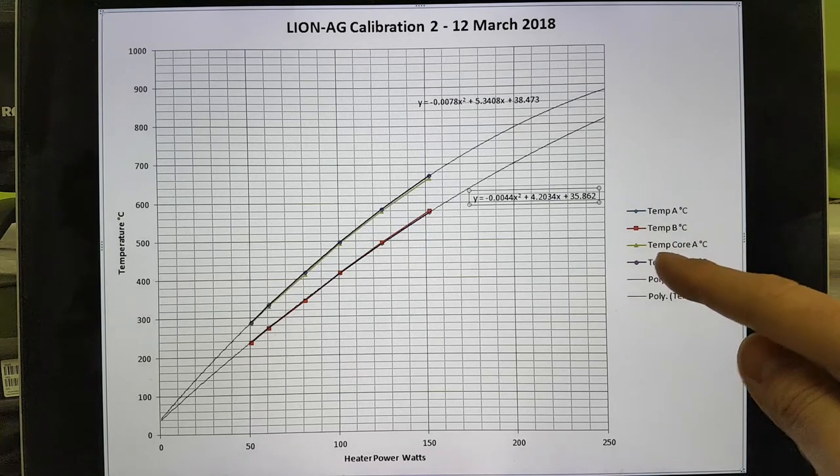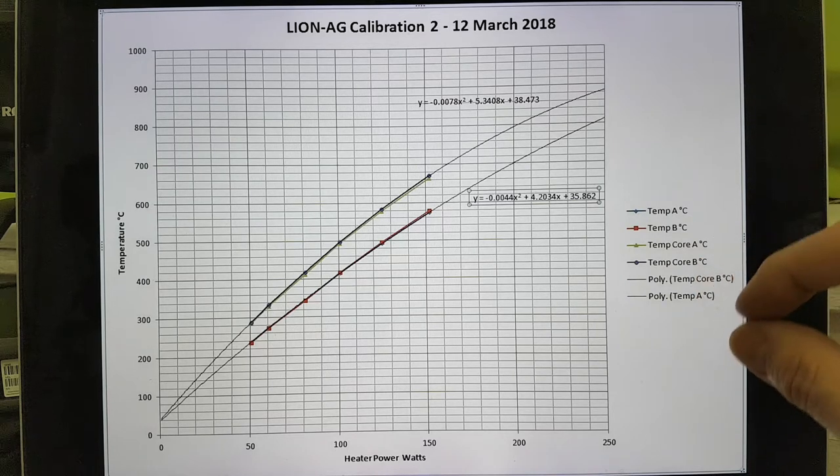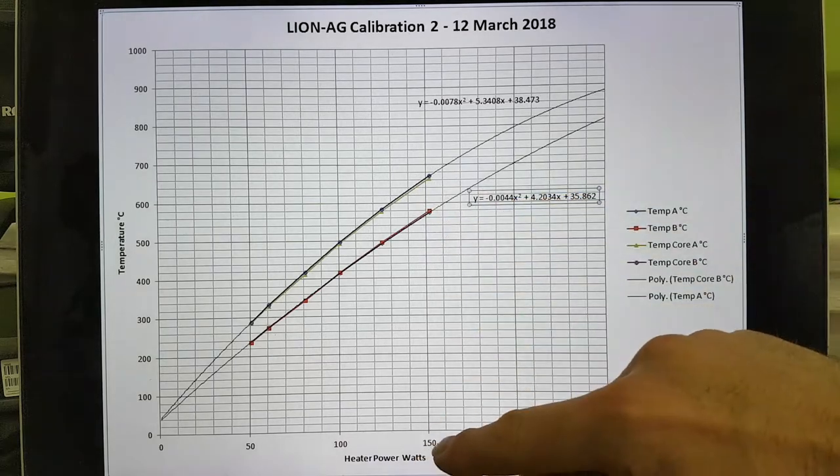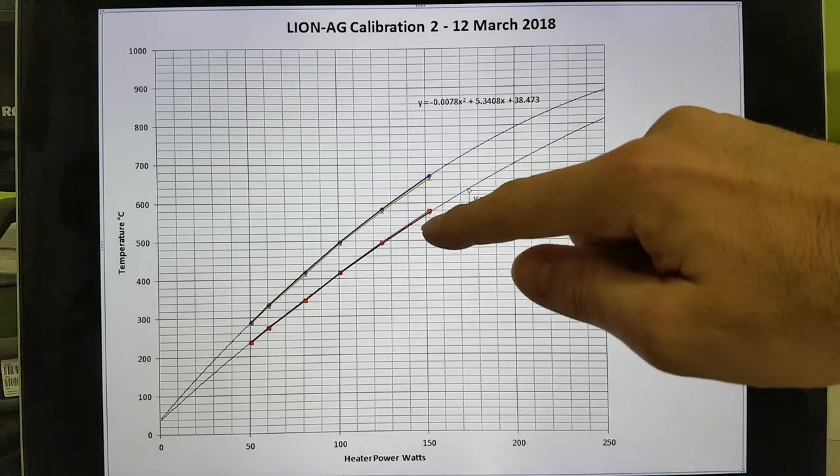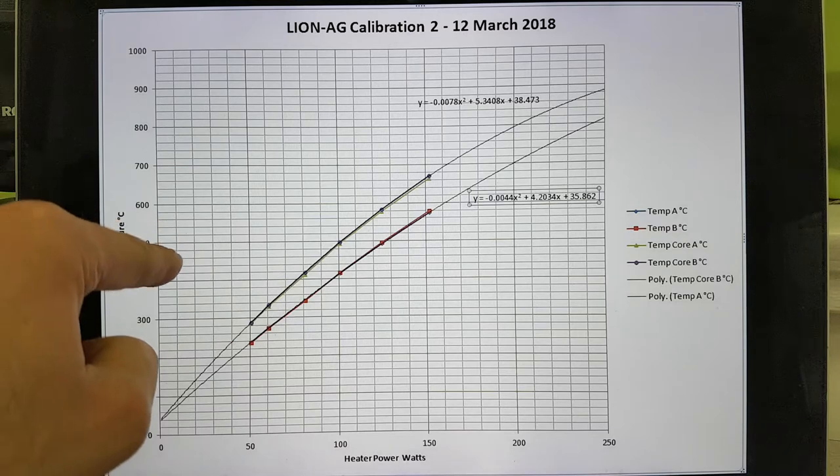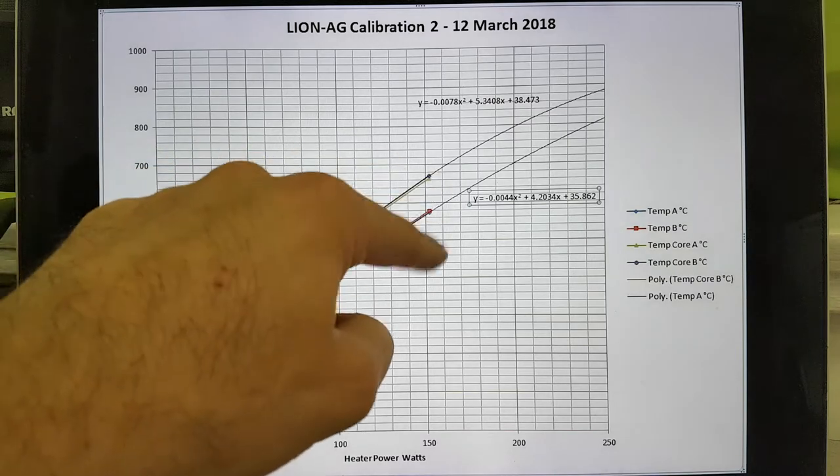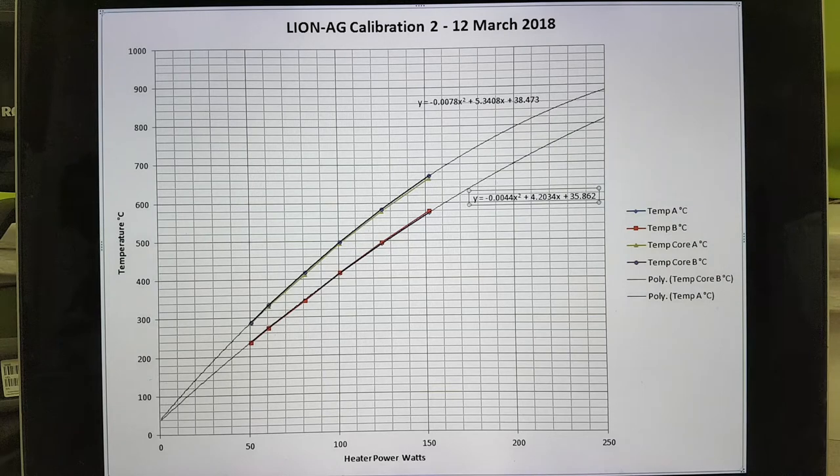And then there is the Temp Core A and Temp Core B. And what this is is where Alan has placed a thermocouple inside the Looking for Heat tube to measure the actual core temperature. So you can see when you're looking at the input power here at just over 150 watts, you've got a separation of 580 to 660 degrees between the core temperature and the temperature as measured at the back of the device.